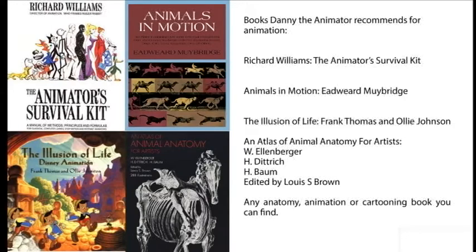Books Danny the animator recommends for animation: Richard Williams, The Animator's Survival Kit. Animals in Motion, Eadweard Muybridge. The Illusion of Life by Frank Thomas and Ollie Johnston. An Atlas of Animal Anatomy for Artists by W. Ellenberger, H. Dietrich, and edited by Lewis S. Brown. And any anatomy, animation, or cartooning book you can find.